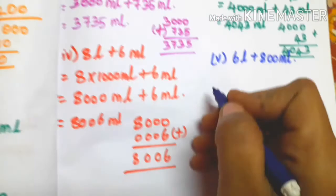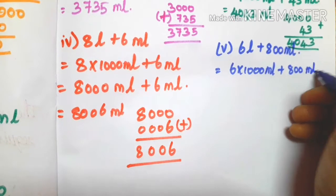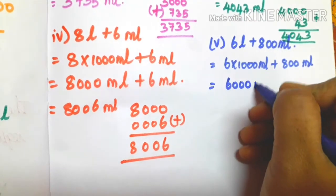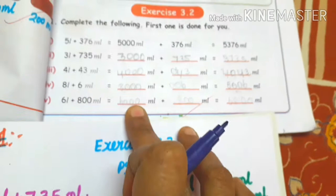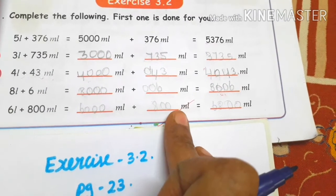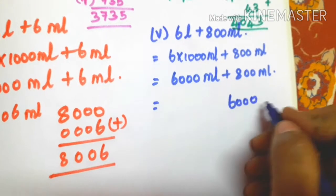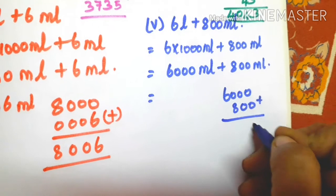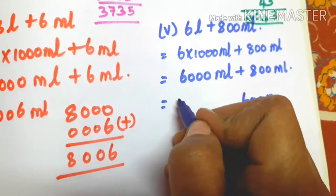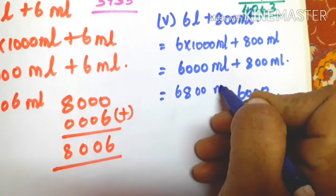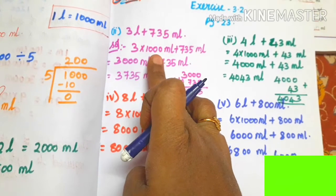Next, the 5th sum: 6 litres converts to 6000 millilitres, plus 800 millilitres. So add 6000 plus 800: 0 plus 0 is 0, 0 plus 0 is 0, 0 plus 8 is 8, next digit is 6. So the answer is 6800 millilitres. Students, first convert litres into millilitres, then add the answer.